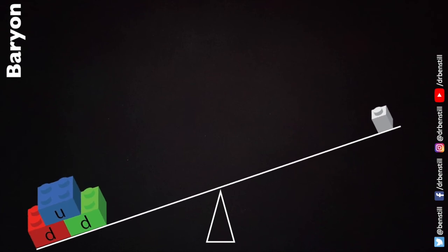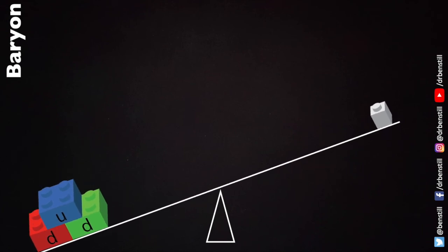The word baryon comes from the fact that if we place a proton or a neutron on one side of a seesaw and we place an electron on the other then the proton or neutron would tip the scales. That is because the proton and neutron are much heavier. This is what gives us the root for the word baryon.